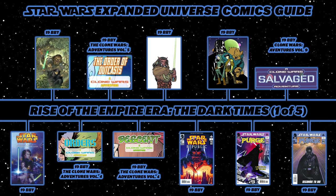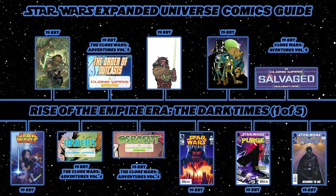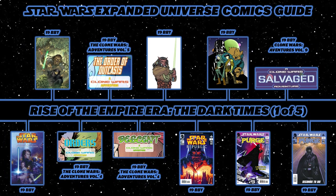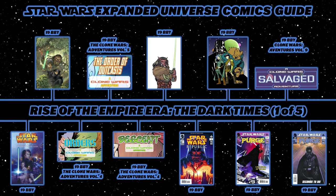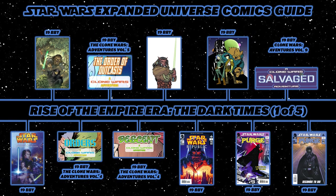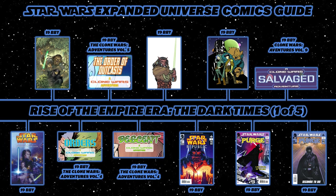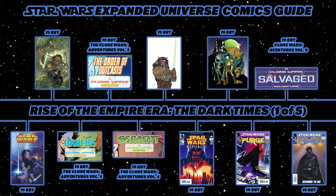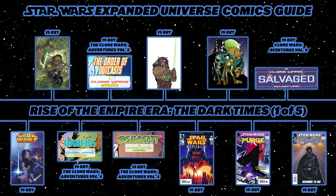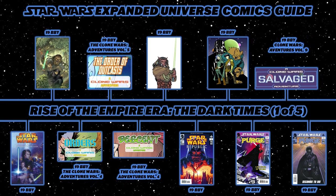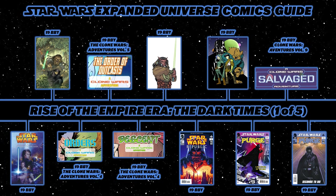Back to Clone Wars Adventures: Volume 4's Orders, Volume 5's The Order of Outcasts, and Volume 4's Descent. Back to Republic: Into the Unknown, issues 79 and 80, focusing on the aftermath of Order 66. Then Republic number 78, Loyalties, set approximately two weeks after Revenge of the Sith.